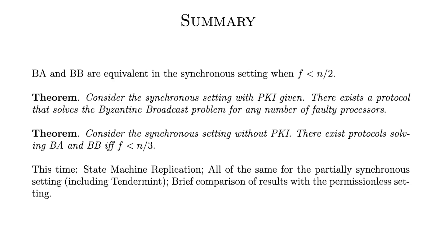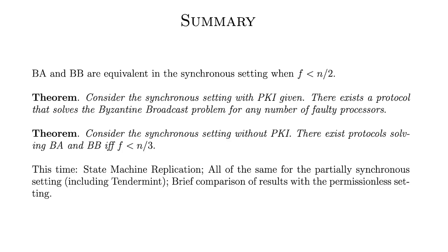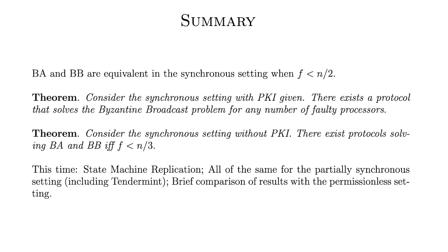Two main theorems from last time. First, in the synchronous setting with a PKI, you can solve Byzantine broadcast for any number of faulty processors — that's the Dolev-Strong protocol. Byzantine agreement can't be solved if f is greater than n over 2, but can be solved if f is less than n over 2. Second, in the synchronous setting without a PKI, you can't solve either problem if f is greater than n over 3, but you can if f is less than n over 3.